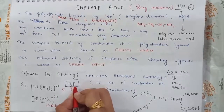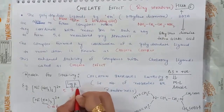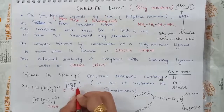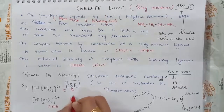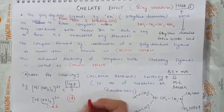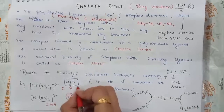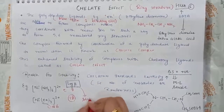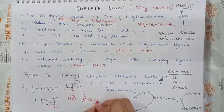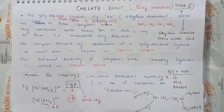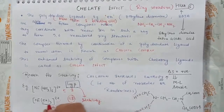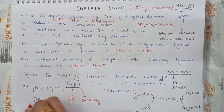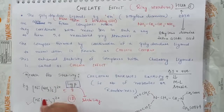The log beta value is a stability parameter. The log beta value is higher in the case of the EN complex, indicating greater thermodynamic stability. This means Ni(en)3 is more stable compared to Ni(NH3)6.